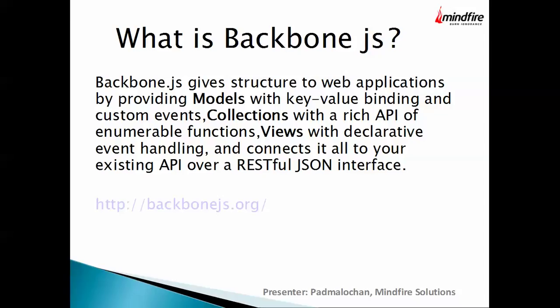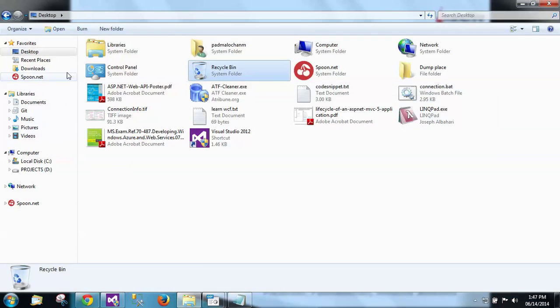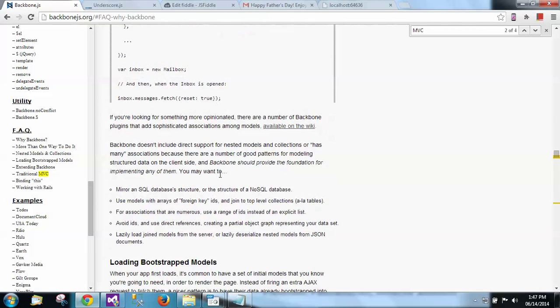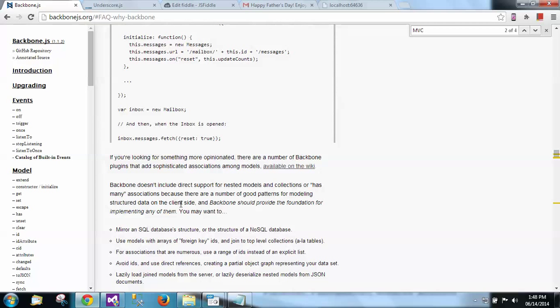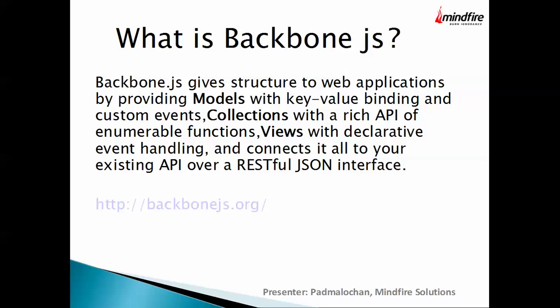So let's get started with Backbone.js. The definition from the official site is: Backbone.js gives structure to web applications by providing models with key-value binding and custom events, collections with a rich API of enumerable functions, views with declarative event handling, and connects it all to your existing API over a RESTful JSON interface. In short, it creates structure by providing models, collections, and views that work over RESTful APIs.